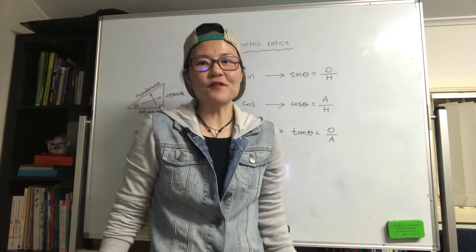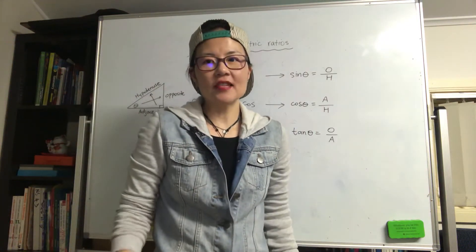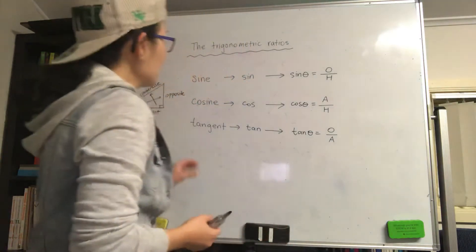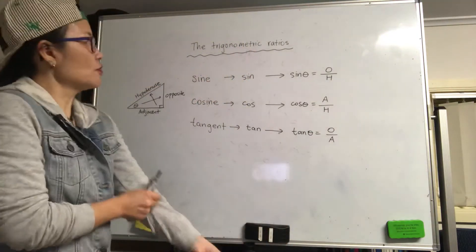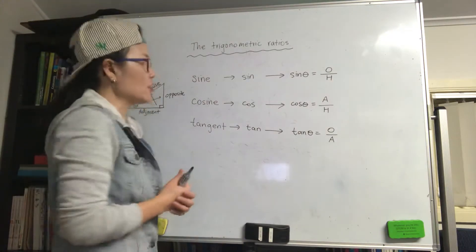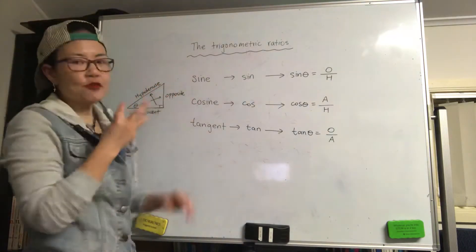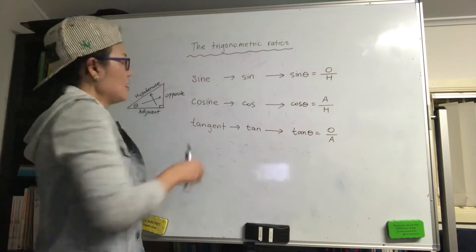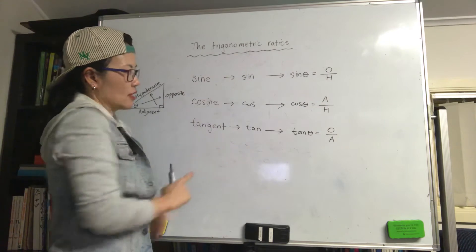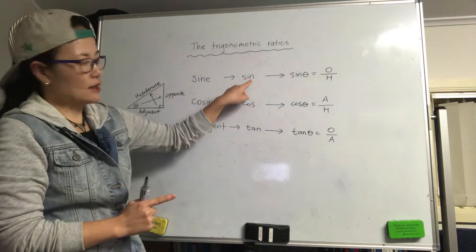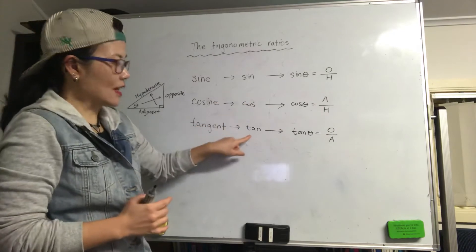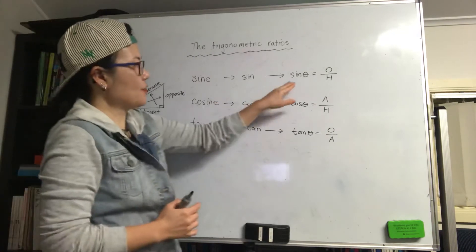Hi guys, and today is the introduction to trigonometry. Let's have a look at trig ratios. We have three ratios: the first ones we call sine, cosine, and tangent. Short for sine — don't call it 'sin', it's sine — and cos and tan.